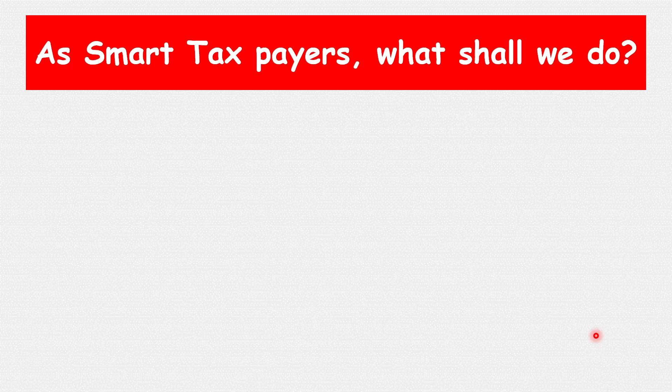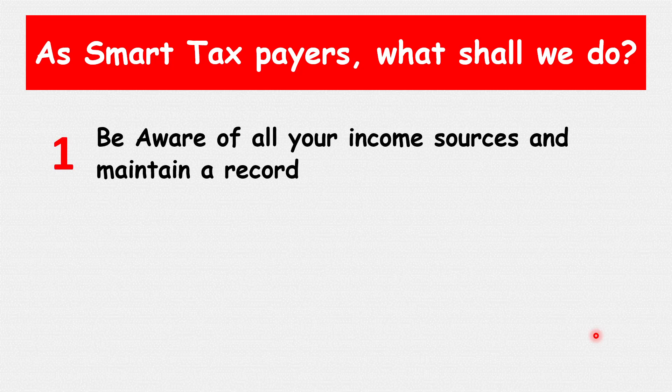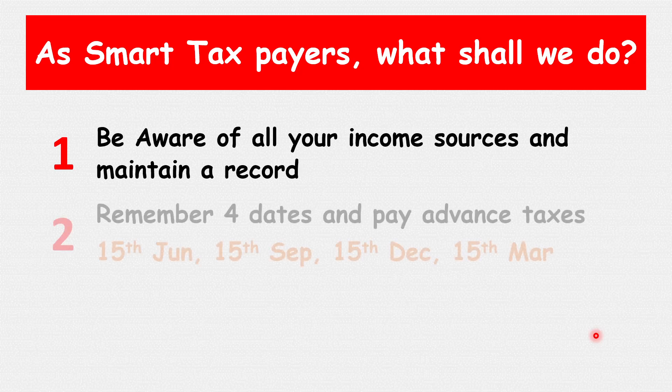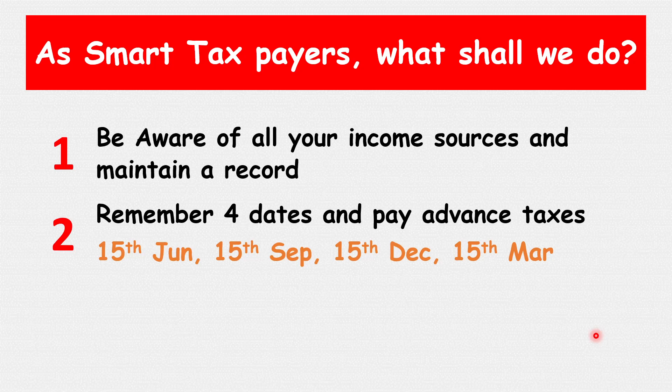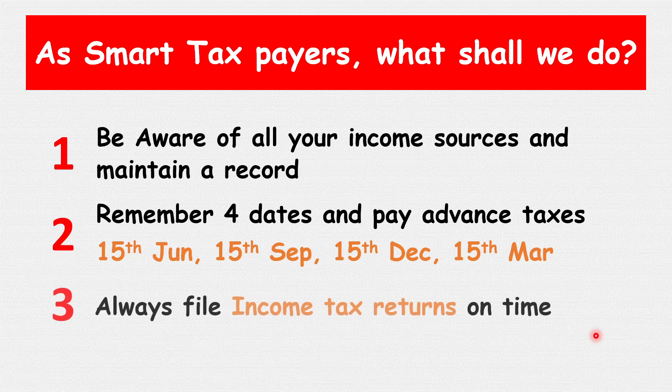So, as smart taxpayers, what do we need to do? Number 1: be aware of all your income sources and maintain a journal — an Excel sheet or notebook — maintain a record. Number 2: remember these four dates for advance tax payment: 15th June, 15th September, 15th December, and 15th March. Note that the government may sometimes change these dates, so watch out. Number 3: always file income tax returns on time — this is a must.